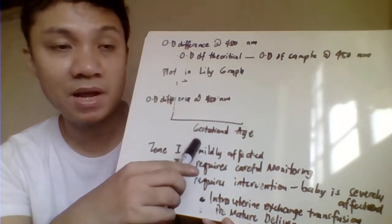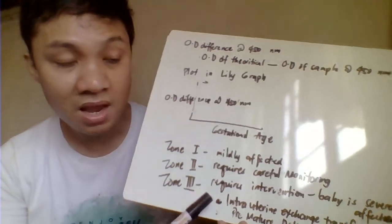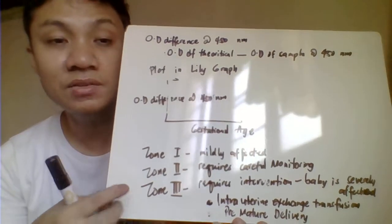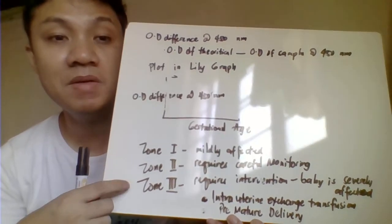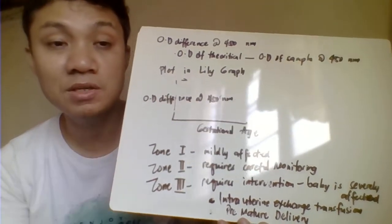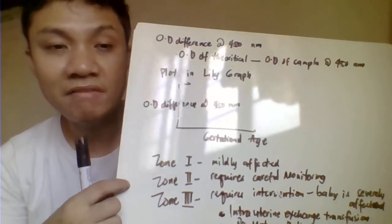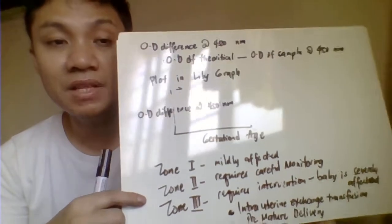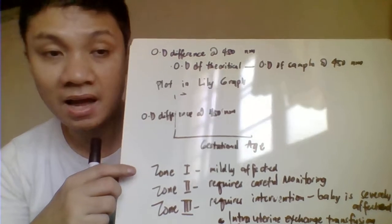If the optical density difference at 450 nm falls in Zone 3, intervention is needed because the baby is severely affected with high bilirubin levels from HDN. You can provide intrauterine exchange transfusion — giving the baby blood — or you can deliver the baby even if premature. However, if you deliver the baby prematurely, make sure the baby is capable by checking fetal lung maturity first.